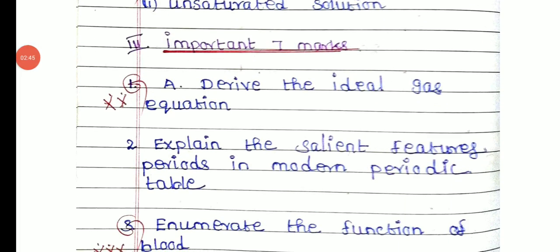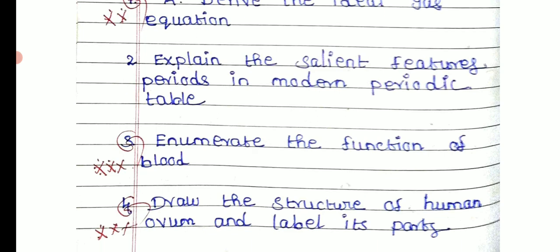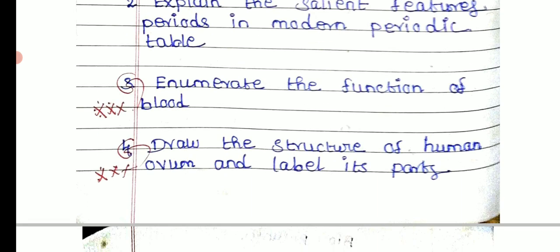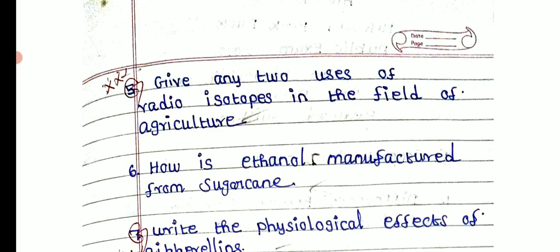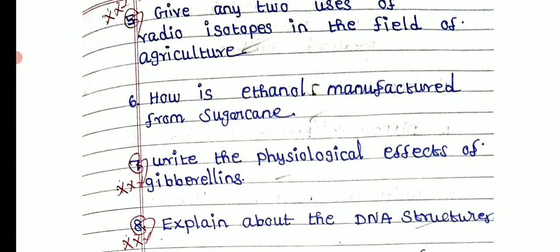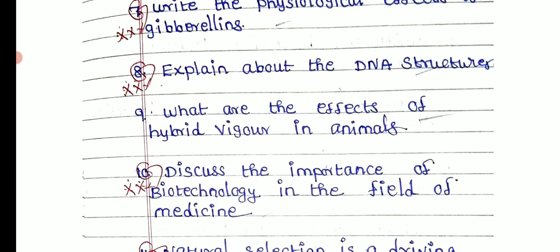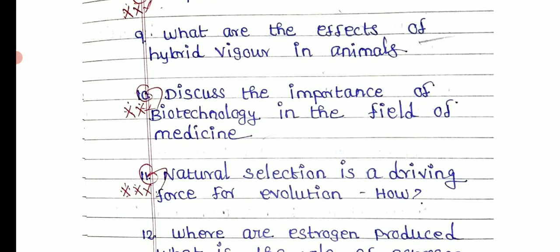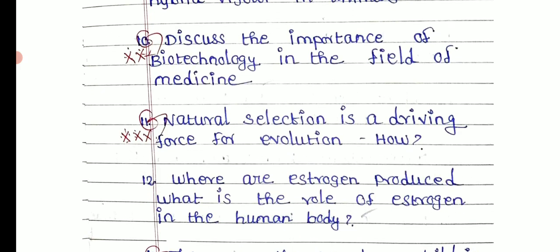Derive the ideal gas equation. Explain the salient features of the modern periodic table. Enumerate the functions of blood. Draw the structure of human ovum, label the parts. Give any two uses of radioisotopes in the field of agriculture. How is ethanol manufactured from sugarcane? Write the physiological effects of gibberellin. Explain about the DNA structure. What are the effects of hybrid vigour in animals? Discuss the importance of biotechnology in the field of medicine.